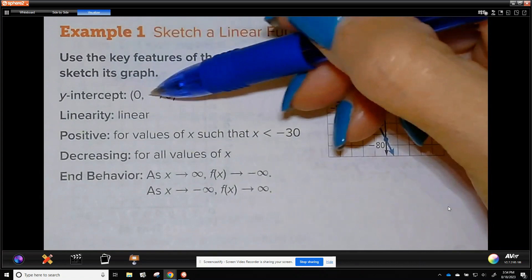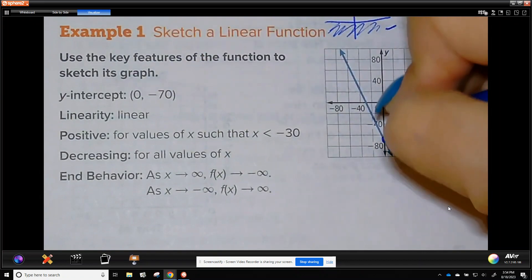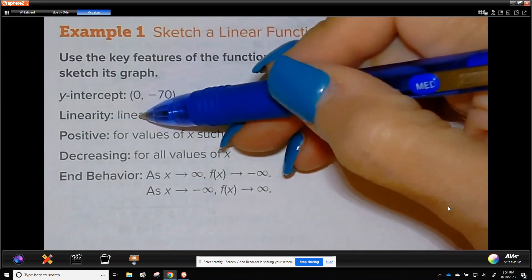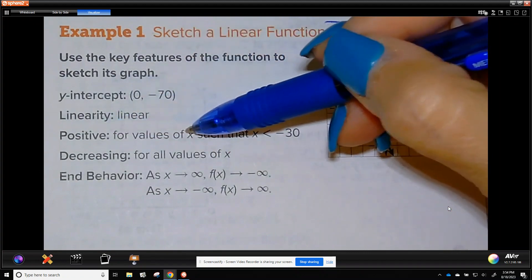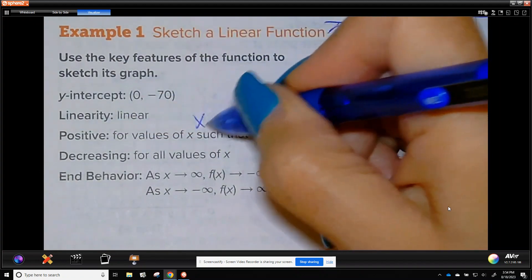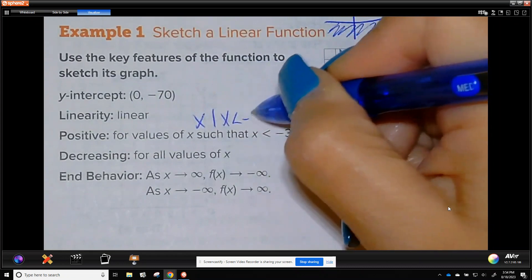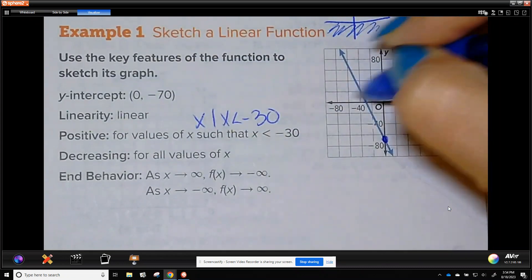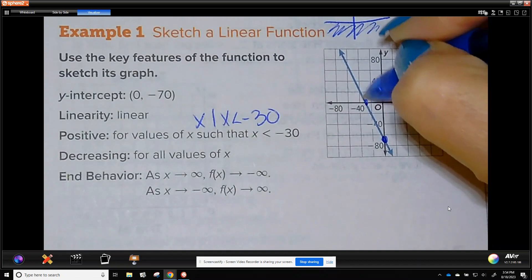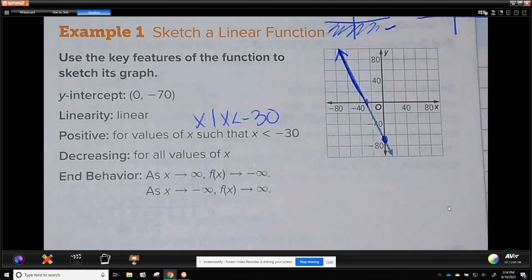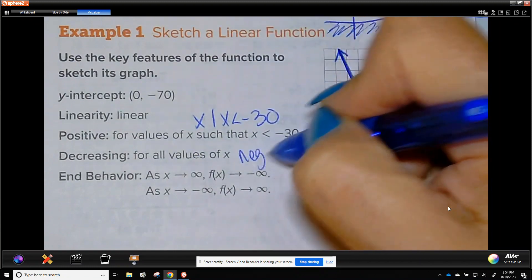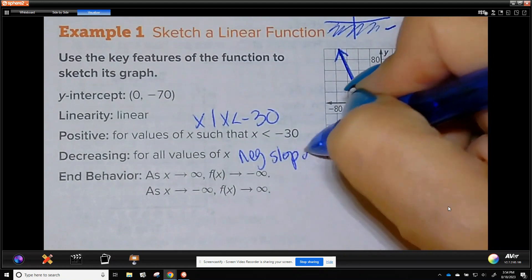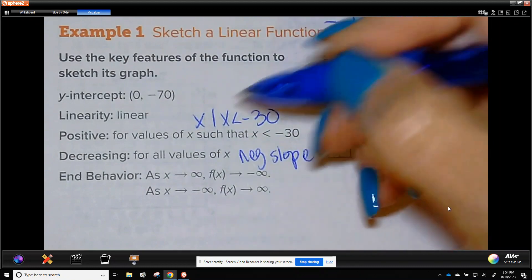So we got a y-intercept of negative 70 which is this point right here. It is linear, so it is positive for values of x such that x is less than negative 30. So here's my x, here's negative 30, and it is positive, it's above that x-axis left of there. It's decreasing for all values which is a negative slope and our graph does have a negative slope.